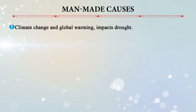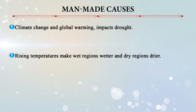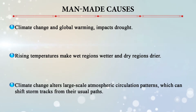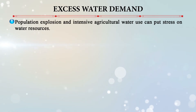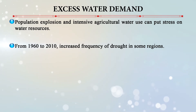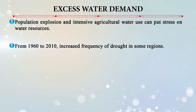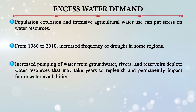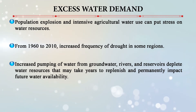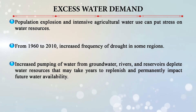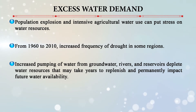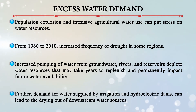Man-made or anthropogenic causes are also responsible for drought. Climate change and global warming cause rising temperatures that make wet regions wetter and drier regions drier, and can also alter large-scale atmospheric circulation patterns, shifting storm tracks. Excess water demands from population explosion and intensive agricultural water use put stress on water resources — increased drought frequency has been noticed from 1960 to 2010. Increased pumping of groundwater from borewells and other supplies is depleting water resources that take years to replenish, impacting future water availability. Demand from irrigation and hydroelectric dams also dries out downstream water sources.